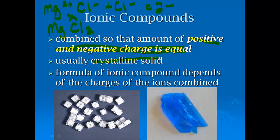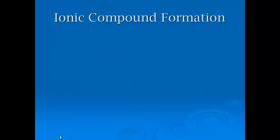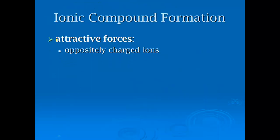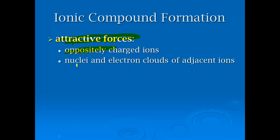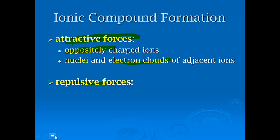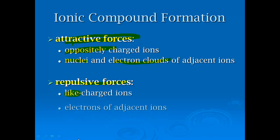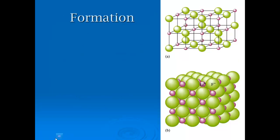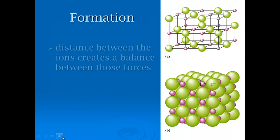Ionic compounds usually form what we call a crystalline solid or crystal. The formula of the ionic compound depends on the charges of the ions combined, as we just saw with magnesium chloride. The attractive forces here are the oppositely charged ions pulling together, along with the nuclei and electron clouds of adjacent ions.